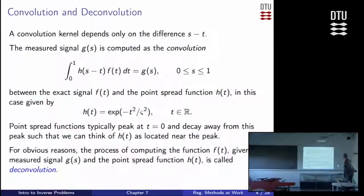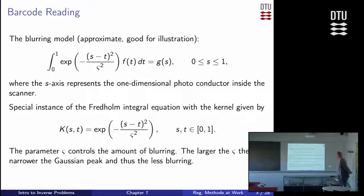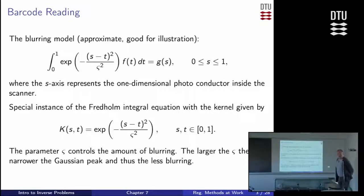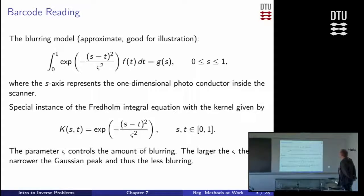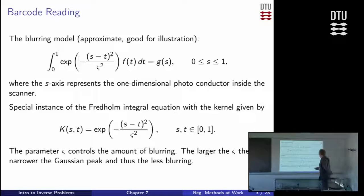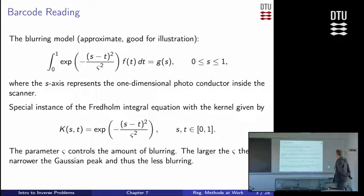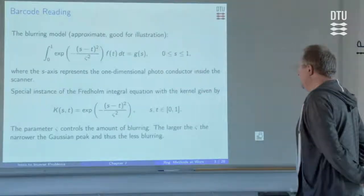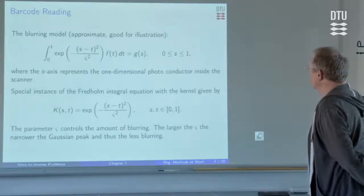What we would like is a way of coming from that red signal back to the sharp exact signal — the blue one. The model for doing that is to set up a model for what blurring goes on in this optical system. We can write that as an integral equation. The right-hand side G is the measured blurred signal, and there's typically some noise on that. The unknown sharp signal is the function F, which is multiplied with the kernel and then integrated. Here we assume that the kernel — the point spread function — is a Gaussian function. So it's a very simple system: a Fredholm integral equation of the first kind.